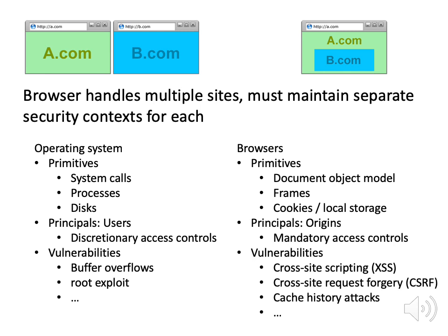We have a parallel between operating systems — with processes, system calls, and file storage — and browsers, where we have the document object model, frames, and local storage. In browsers, people have settled on an origin as the principal, which means we look at the website, the protocol, and the port number that a request came from and treat that as the entity making access. If you go to www.amazon.com on port 80, then in effect Amazon is a user in your browser — Amazon pages can share information with each other, but we want to isolate them from pages that don't start with www.amazon.com.